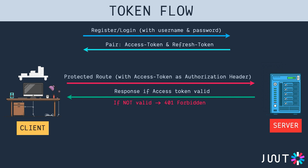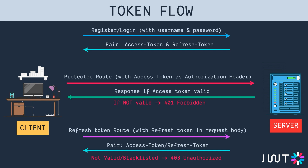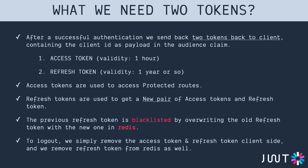When the client receives a 401, it sends another request to the server containing the refresh token in the request body. The server verifies that refresh token, and if valid, sends back a new pair — a new access token and a new refresh token, not the old one. If the refresh token is not valid or is blacklisted, the server sends back an HTTP 403 unauthorized response.